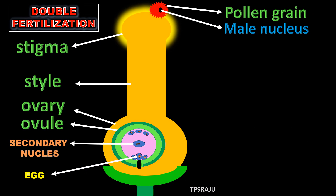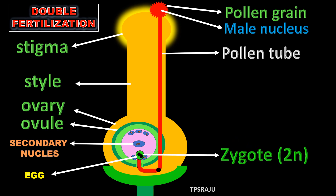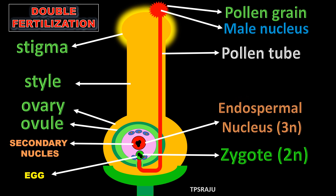Let us observe the fertilization process in plants clearly. The male nucleus travels through the pollen tube. Before reaching the ovule, the male nucleus divides into two. One male nucleus fuses with the egg cell to form a zygote — this is the first fertilization. Then the other male nucleus fuses with the secondary nucleus to form the endosperm nucleus — this is the second fertilization. Likewise, double fertilization occurs in plants.